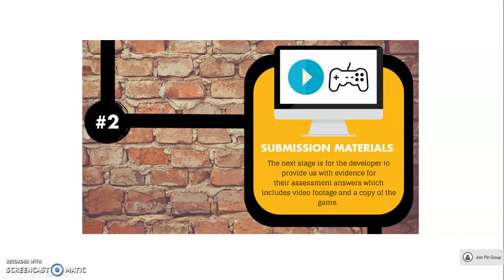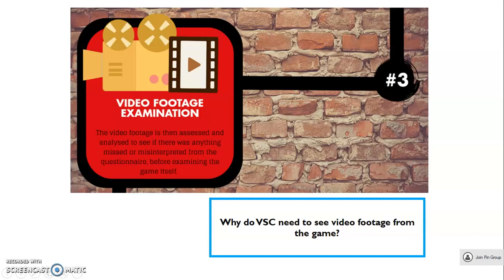Step two is submission materials: the next stage is where the developer provides evidence of what they've said in the questionnaire. So if they've said their game has very mild violence, they need to send footage of that violence. Step three: the VSC examine that footage. They go through their own internal tests and look at the video footage — does it match up with what the developer has said about the game? Make sure you're noting these things down. There's also a question on screen: why do the VSC need to see the footage from the game themselves?